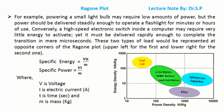Conversely, a high-speed electronic switch inside a computer may require very little energy to activate, yet it must be delivered rapidly enough to complete the transition in mere microseconds. These two types of load would be represented at opposite corners of the Ragone plot — upper left for the first and lower right for the second one.